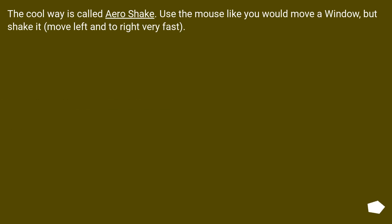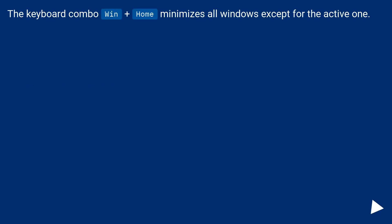The cool way is called Aero Shake. Use the mouse like you would move a window, but shake it — move left and right very fast. The keyboard combo Win plus Home also minimizes all windows except for the active one.